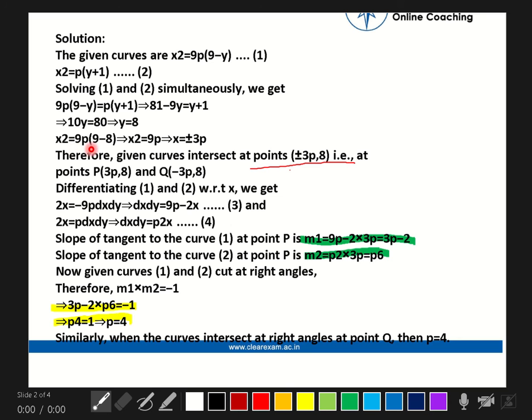You will get x² = 9P, which means x = ±3√P. Therefore, the given curves intersect at points (±3√P, 8), that is at points P(3√P, 8) and Q(-3√P, 8).